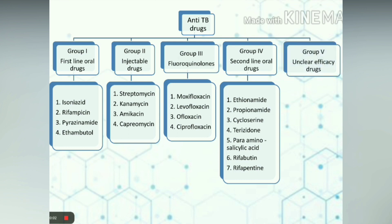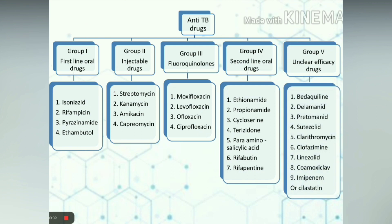Group 5 drugs are those which have unclear efficacy and higher toxicity. They include newer drugs such as bedaquiline, delamanid, pretomanid, sutezolid, and other drugs like clarithromycin, clofazimine, linezolid, co-amoxiclav, and imipenem-cilastatin.